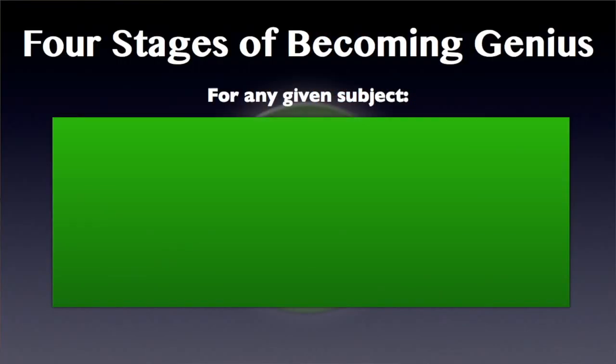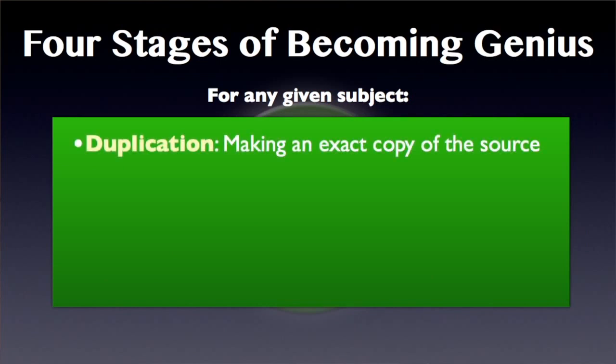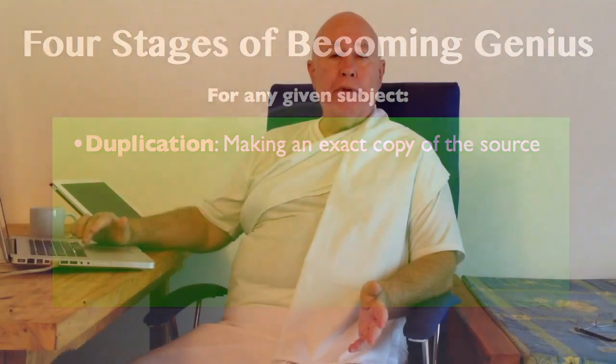The method we use in Becoming Genius has four stages for any given subject. The first stage is duplication — making an exact copy of the source materials. If we're going to learn about music, we have to go to a book on music and then make an exact copy of that knowledge in our own minds. Or if we're going to learn about learning, like we are now, you have to be able and willing to make an exact copy of that knowledge in your own mind.